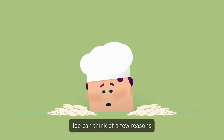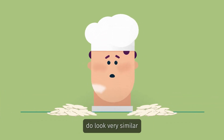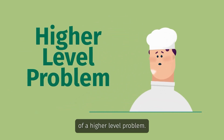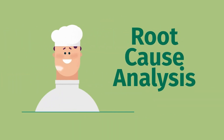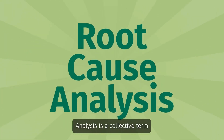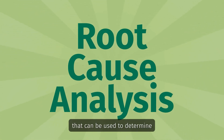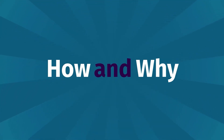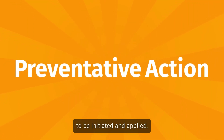Joe is rightly concerned but wants to find out why this has happened and what he can do to prevent it happening again. He can think of a few reasons why it might have happened — the almonds and coconut do look very similar when they're chopped up, but that might be the symptom of a higher level problem. Joe needs to use root cause analysis. Root cause analysis is a collective term for a number of structured methods that can be used to determine how and why a problem has occurred.